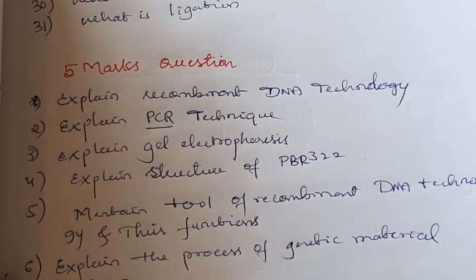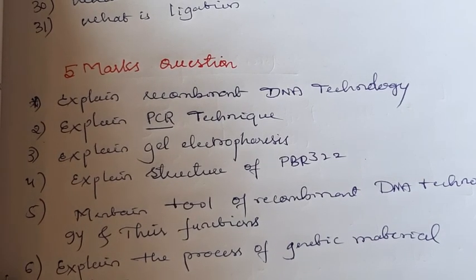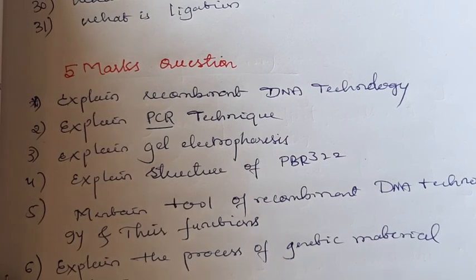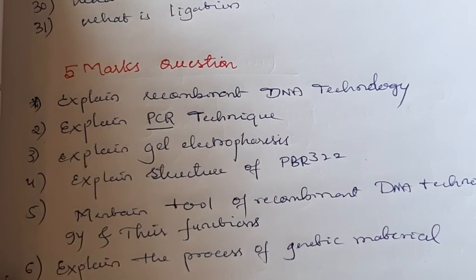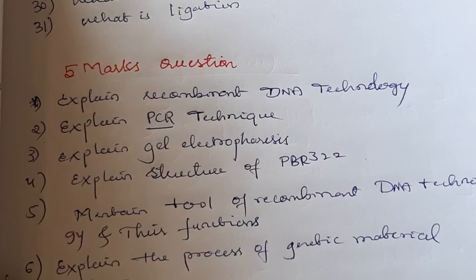Next question for 5 marks: explain the structure of pBR322. This is a very important one. You have to draw the diagram and label it neatly. Then explain what are recognition sites, what are selectable markers, and what is the ori site. Explain each part neatly, including ampicillin and tetracycline resistance. This is a very important diagram.